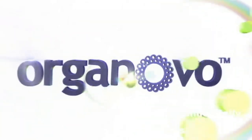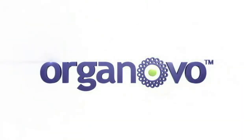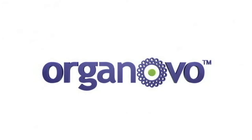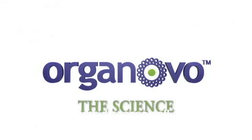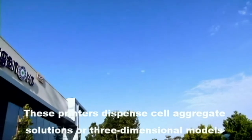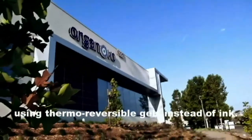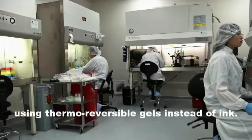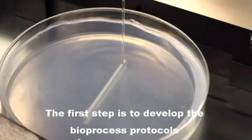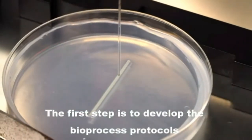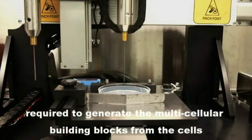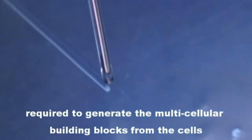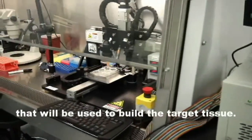How is it made? Organovo is a company that commercially modifies inkjet printers and now designs and manufactures bioprinters. These printers dispense cell aggregate solutions for three-dimensional models using thermoreversible gels instead of ink. The first step is to develop the bioprocess protocols required to generate the multicellular building blocks from the cells that will be used to build the target tissue.